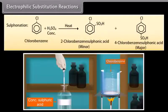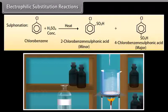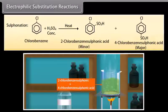Sulphonation. When chlorobenzene solution is mixed with concentrated sulfuric acid, it reacts to give 2-chlorobenzene sulfonic acid which is a minor product and 4-chlorobenzene sulfonic acid which is a major product.